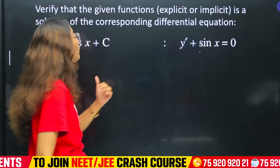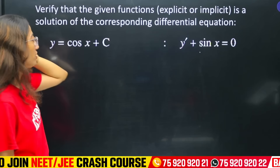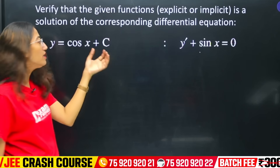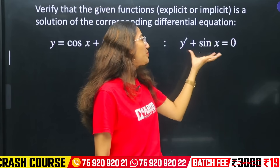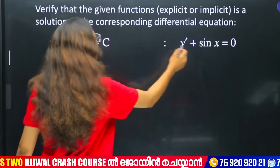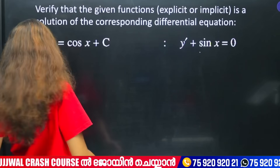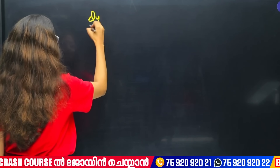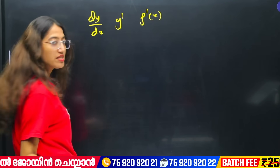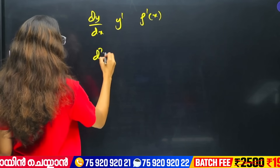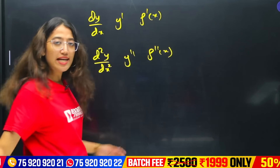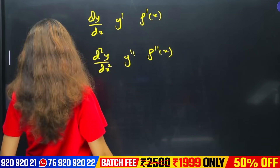Let's verify the solution. The solution is y = cosx + c, where c is an arbitrary constant. We verify it satisfies y' + sinx = 0. Here y' is the first derivative — dy/dx — and y double dash is d²y/dx². The notation: y' = f'(x) is the first derivative, y'' = f''(x) is the second derivative.